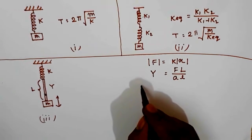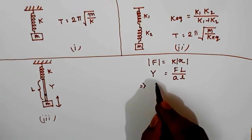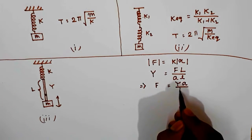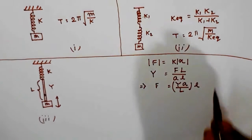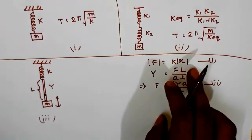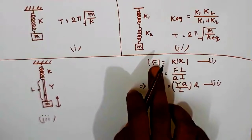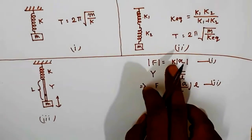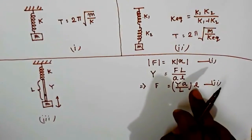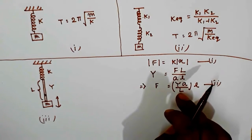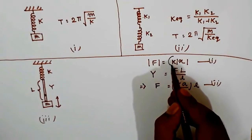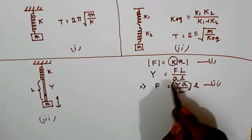Now we get F equal to Y*A/L * l. Now you can compare this equation with the spring equation. For a spring, x is the extension and F is the internal generated force, and k is the proportionality constant. Also for a rubber band, l is the elongation, Y*A/L is a constant, and F is the internally generated force. So we can compare k with this quantity Y*A/L.